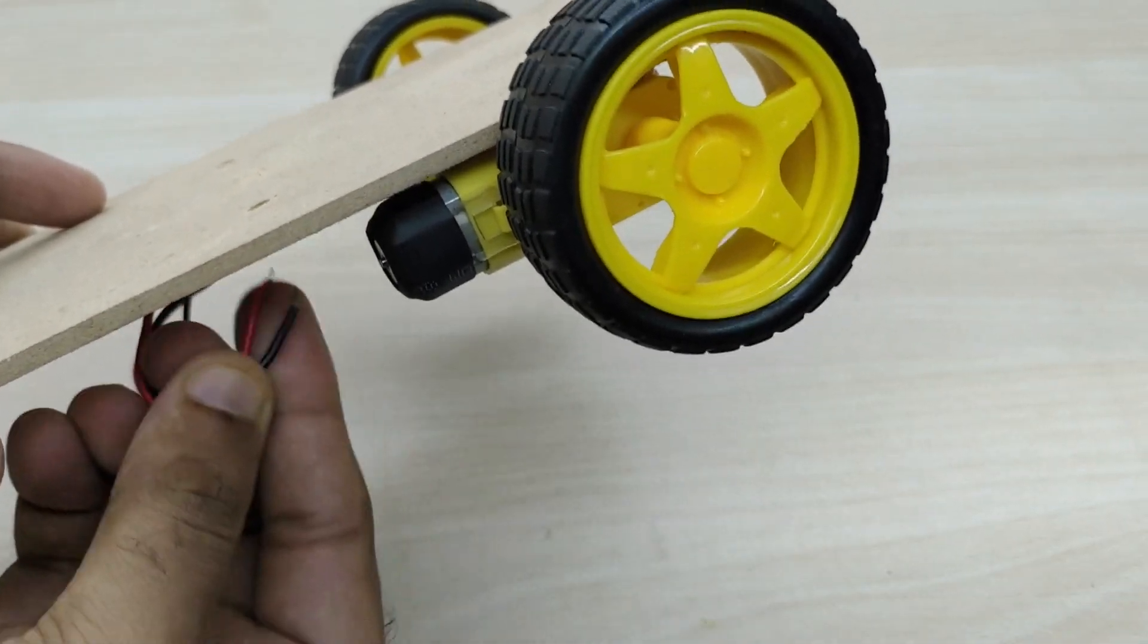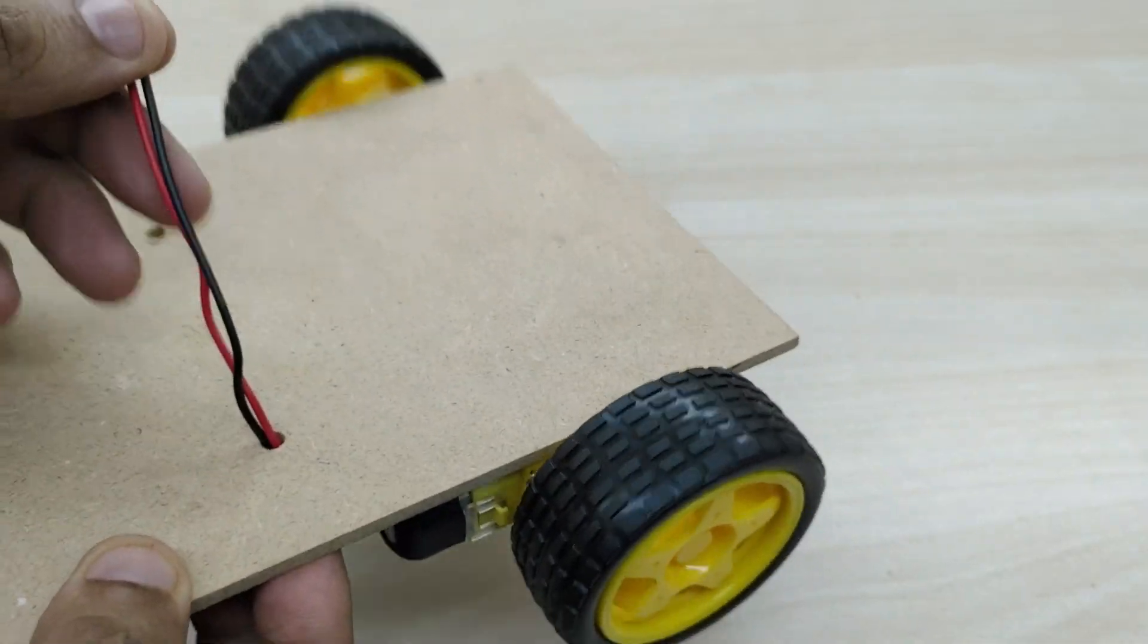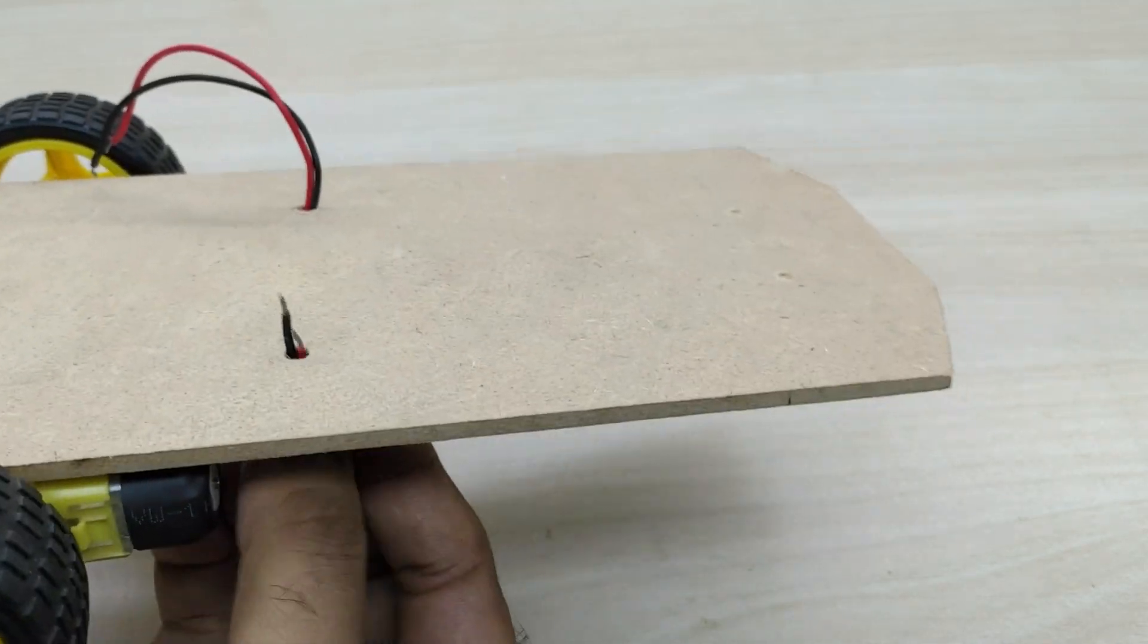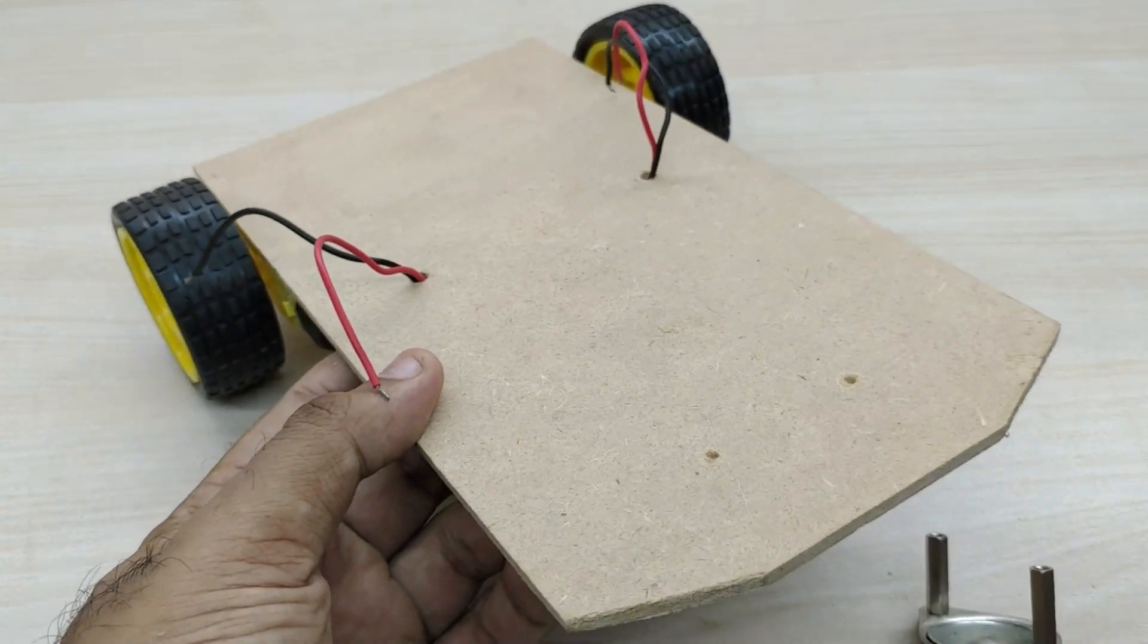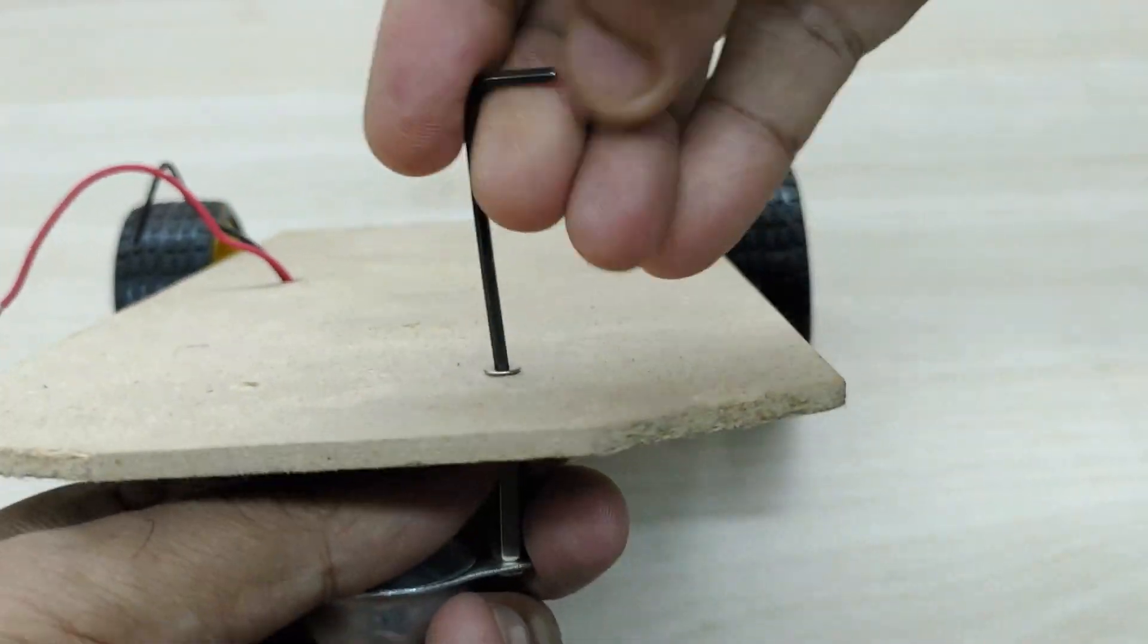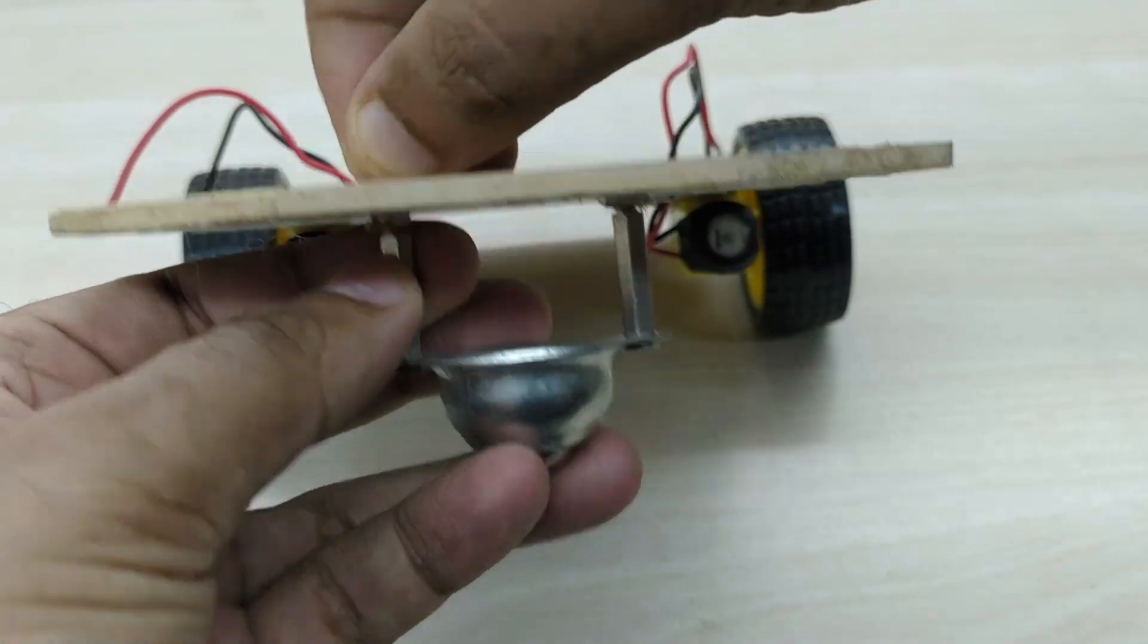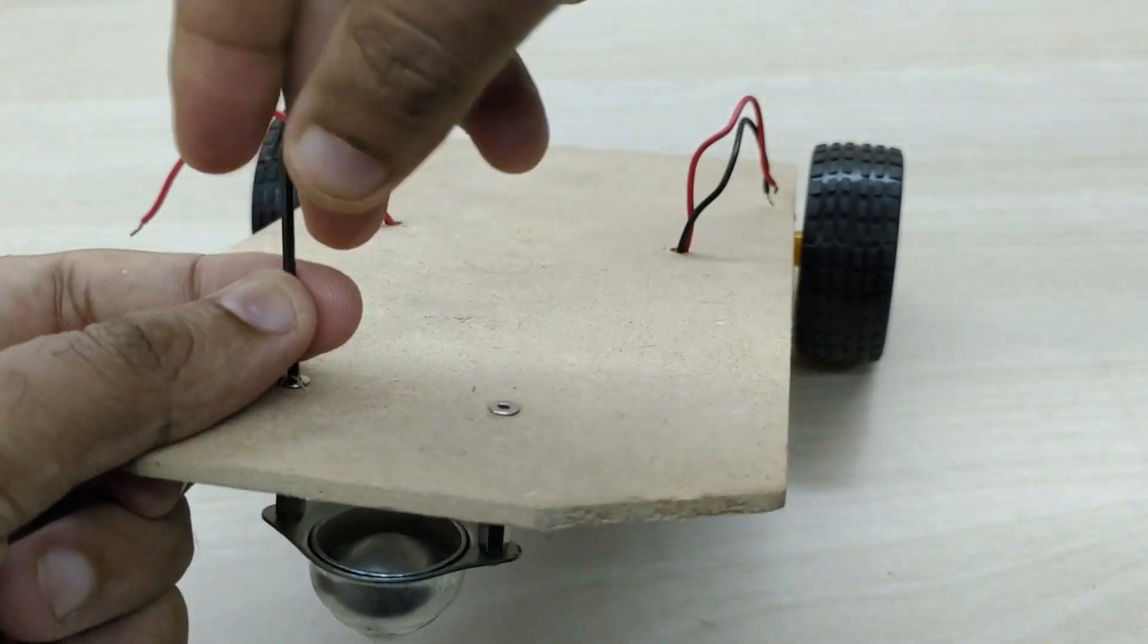Take the positive and negative wires of both the motors through the hole from below to the top. Now, we have to fix the caster wheel at the front. Providing a caster wheel at the front helps the robot to quickly change direction, since it has a ball that can roll in any direction.